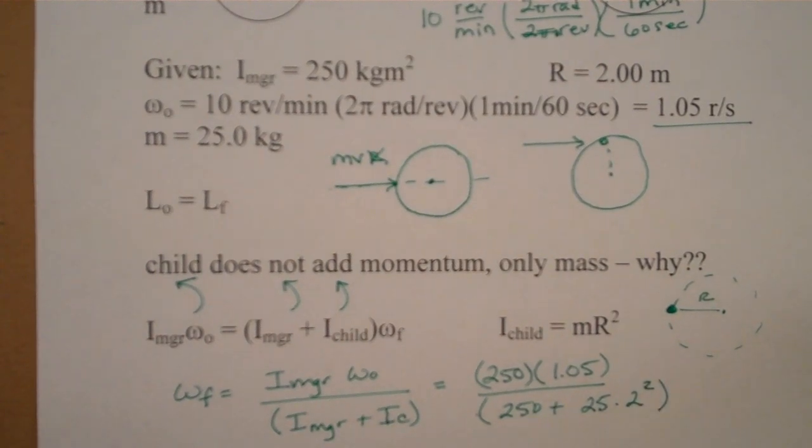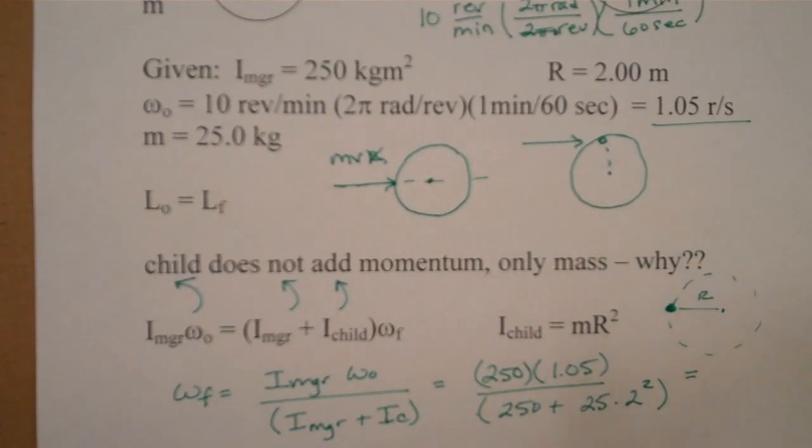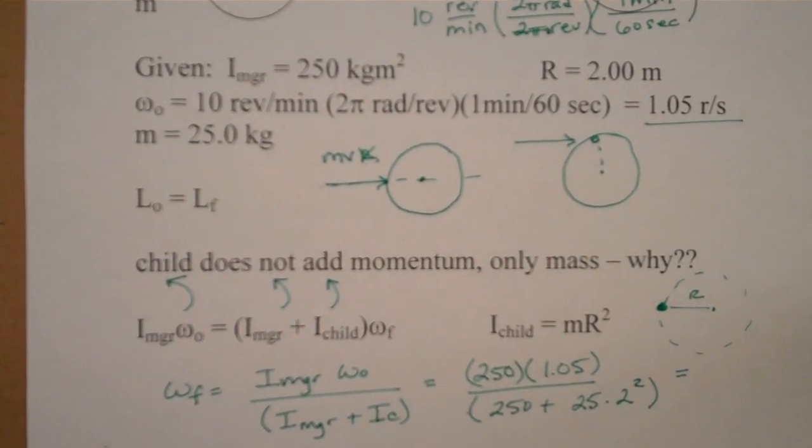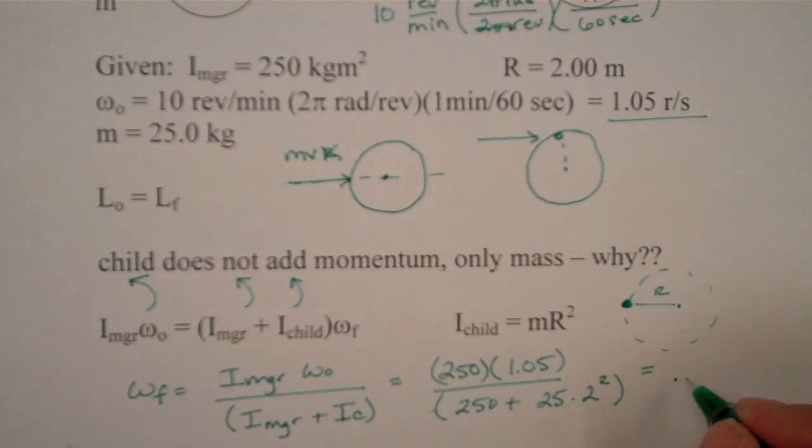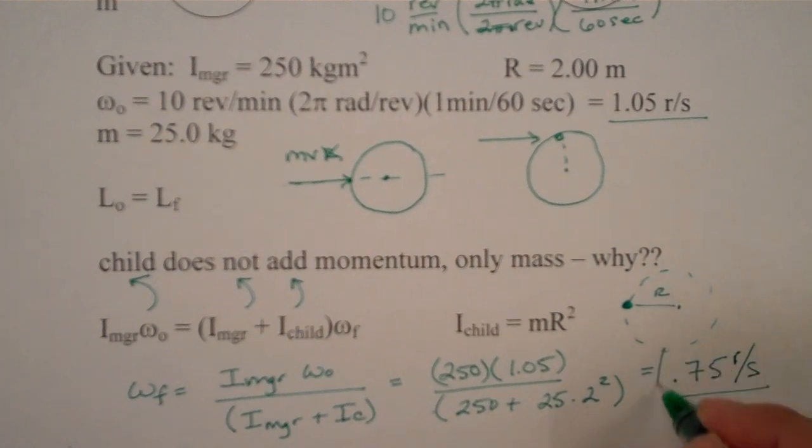And that's going to be the child's mass times the radius squared. And the radius was 2, so 2 squared. So it looks like we're adding 100. And if we put that in our calculator to find out what the new speed is, it slows down to 0.75 radians per second.